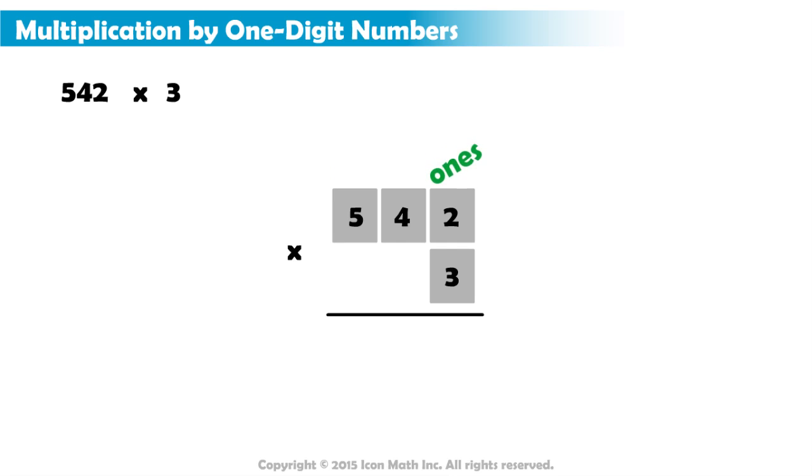Starting with the ones place, 3 multiplied by 2 is 6. So, we write a 6 directly below the 3 and 2. Again, we write our results from right to left.